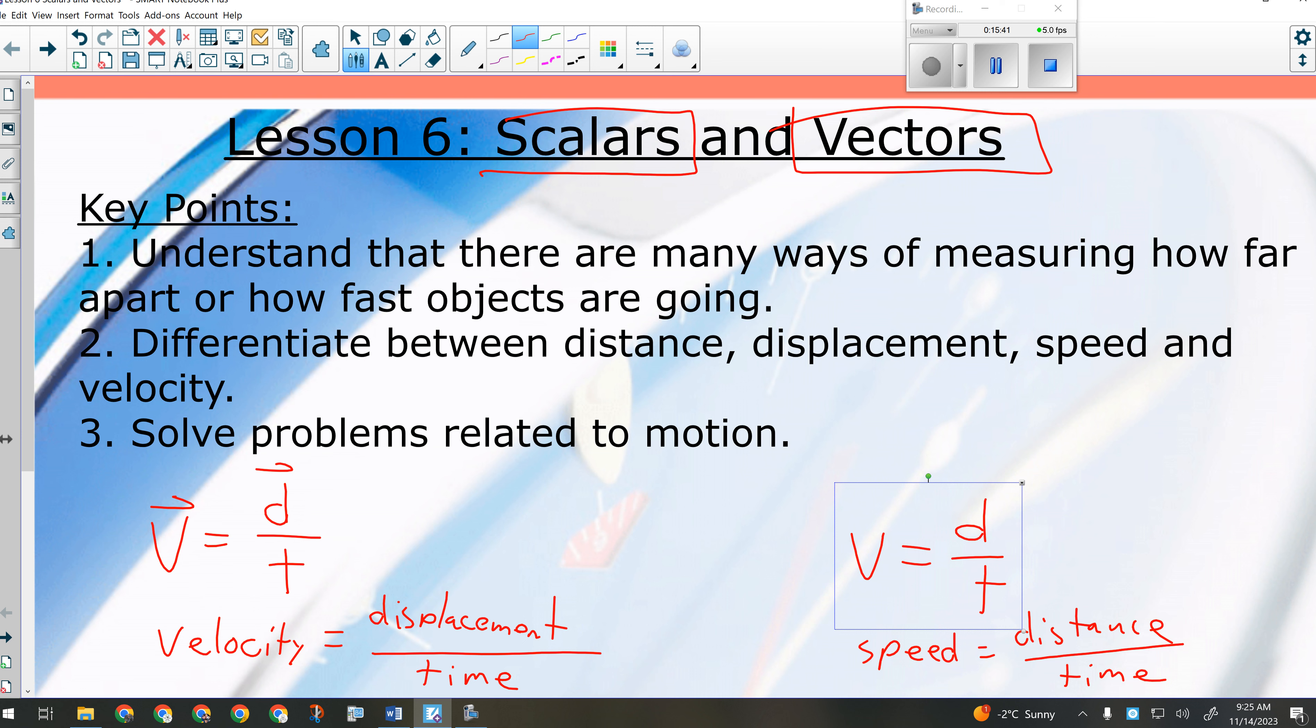It's why you only ever get a speeding ticket, not a velocity-ing ticket. Because if you break the speed limit, it doesn't matter which direction you're going, unless of course you're going the wrong way. Then that's a separate ticket. But your speed limit is a speed. It is a scalar quantity. It just says, this is the fastest you should go. It doesn't say this is the fastest and in what direction you should go.